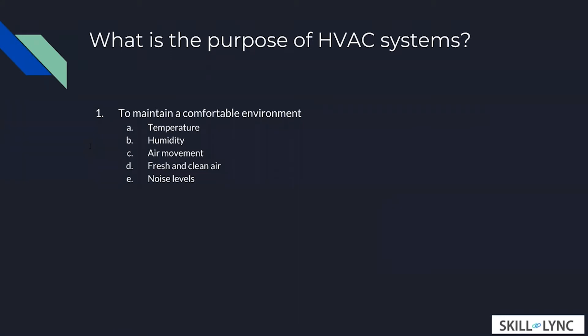So what is the purpose of HVAC systems? It's mainly used to create a comfortable environment. Its applications are wide-ranging, but in general the main purpose of an HVAC system is to make sure you have temperature, humidity, air movement, fresh and clean air, and noise levels controlled in any type of environment — whether that's an office, a mall, a stadium, or a passenger car. Anywhere you need to optimize these control parameters, you would call that an HVAC system.